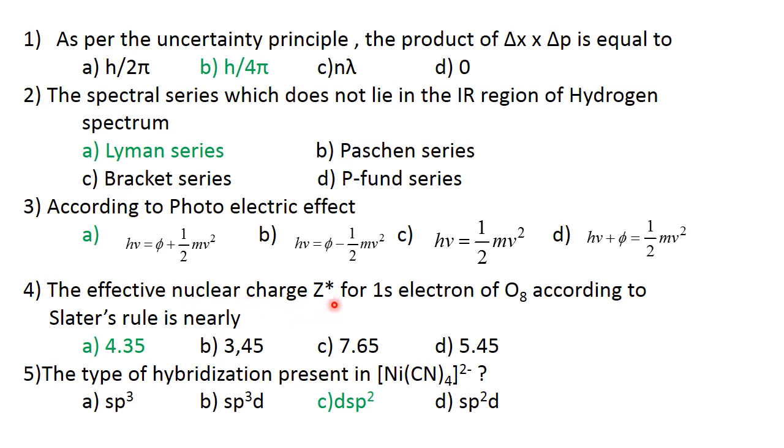The effective nuclear charge Z star for 1s electron of O8 according to Slater's rule is nearly 4.35. The correct answer is A.